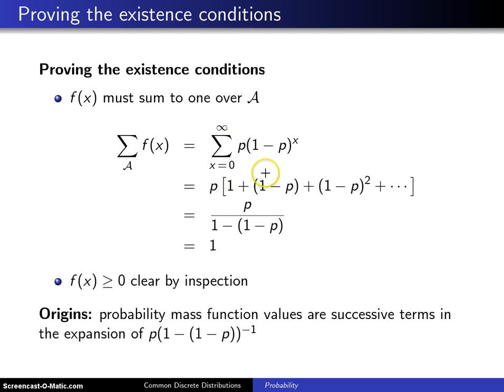And then for the geometric distribution, its support goes from 0 to infinity. So the summation limits go from 0 to infinity of the probability mass function, which is p times 1 minus p raised to the x power.